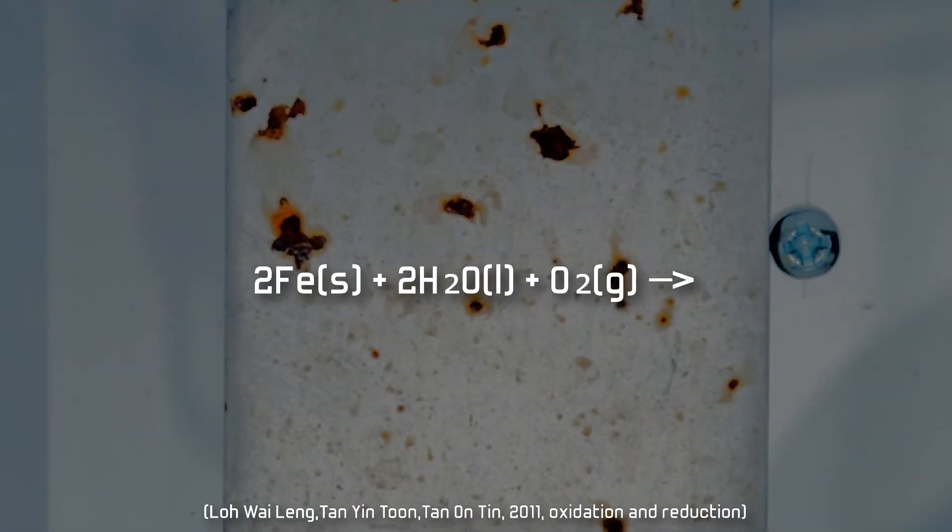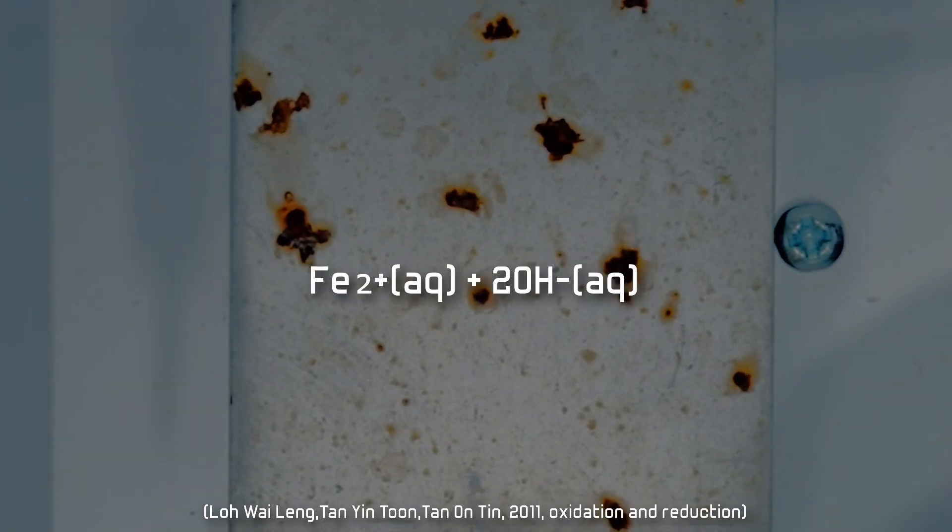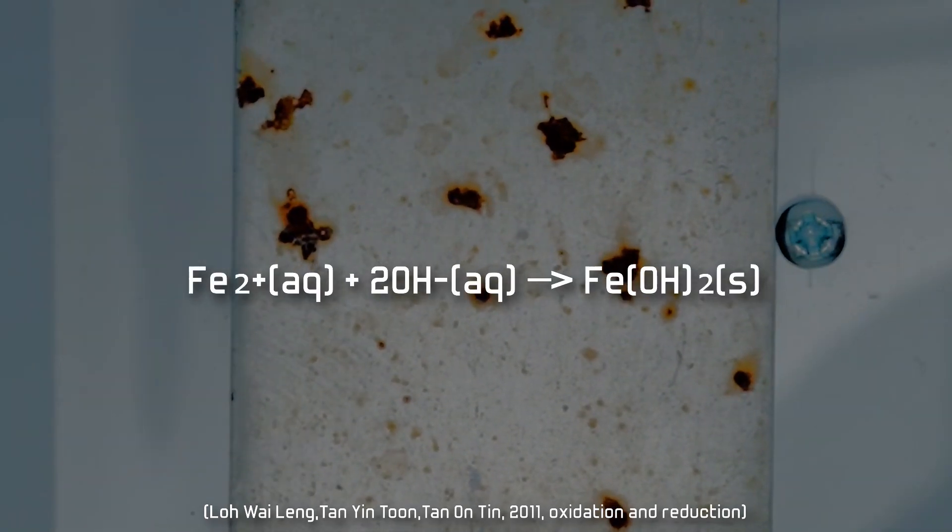First, let's break down what happened. Rusting has the equation where we first introduce solid iron to liquid water and gaseous air to produce aqueous iron and an aqueous hydroxy group. These two then further react to create iron 2 hydroxide, which is white and a little bit green.